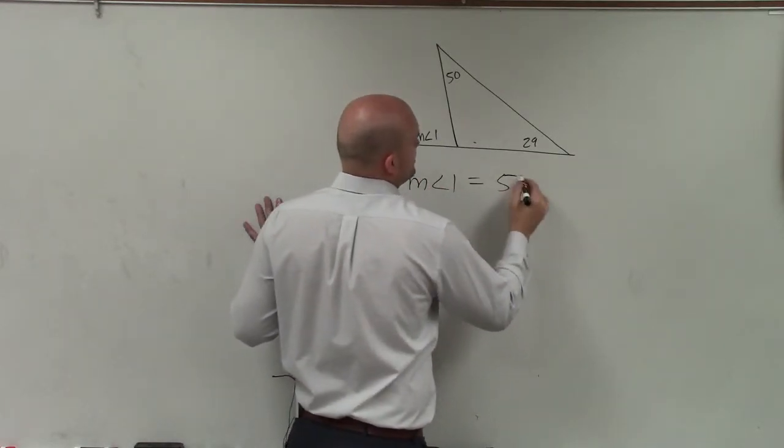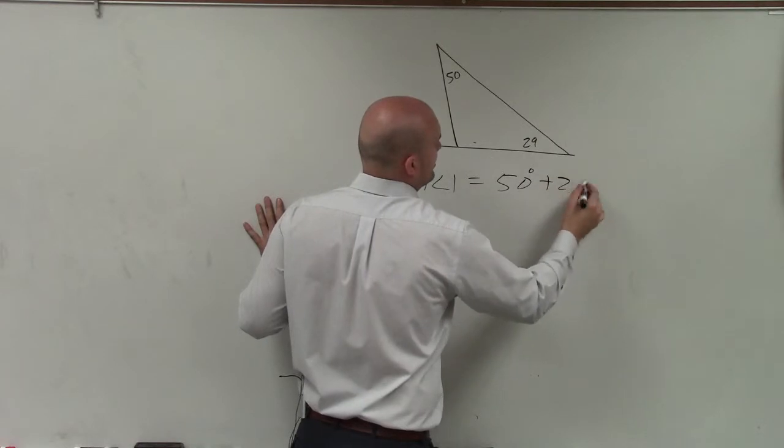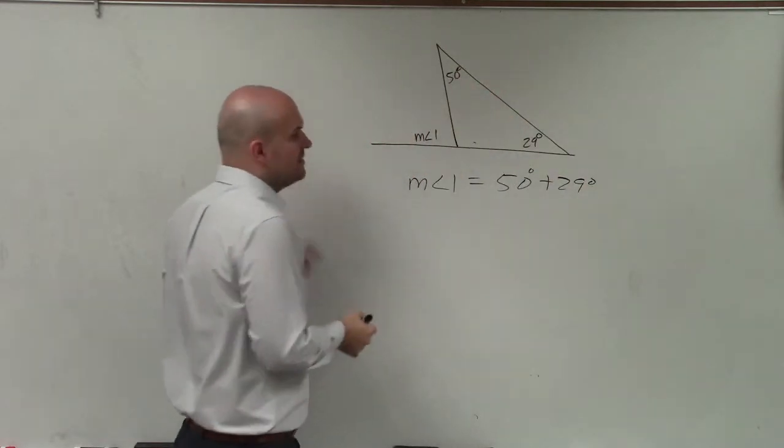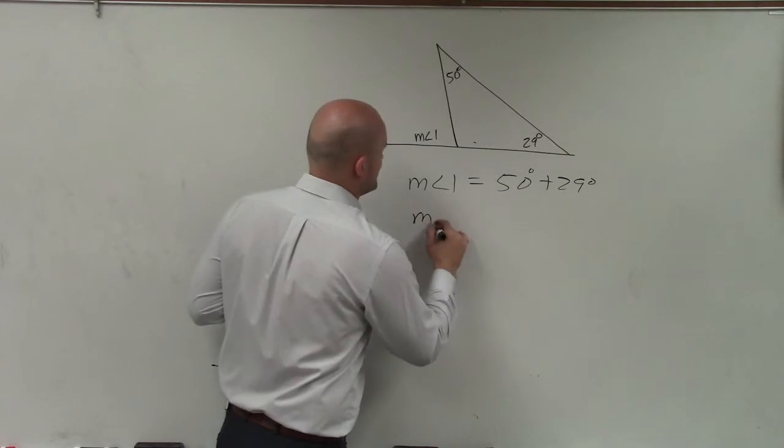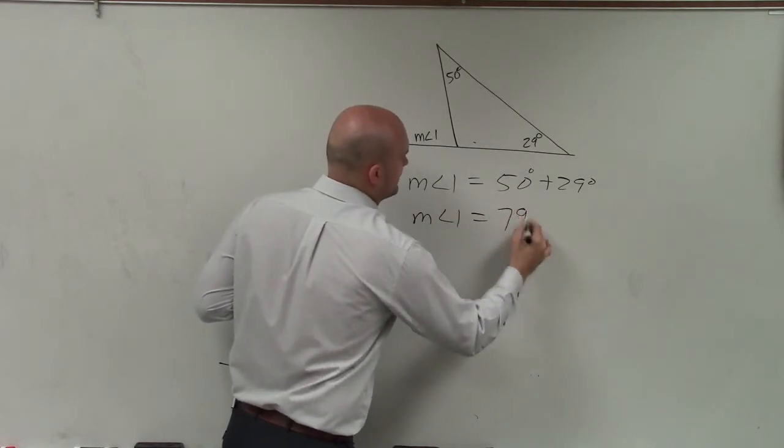Measure of angle one is equal to the sum of 50 degrees plus 29 degrees. So that's going to equal the measure of angle one equals 79 degrees.